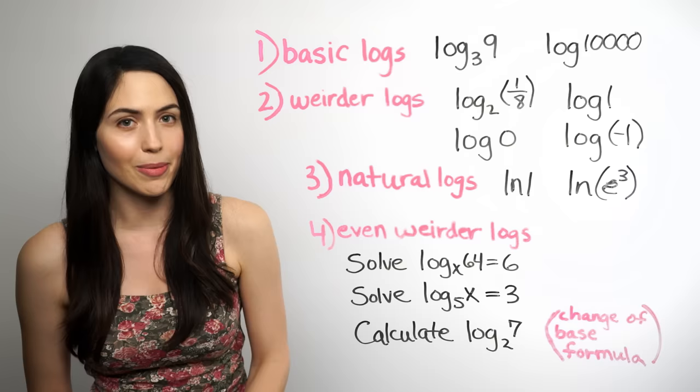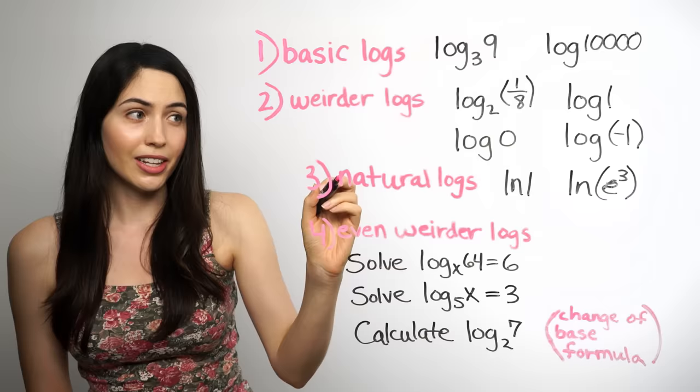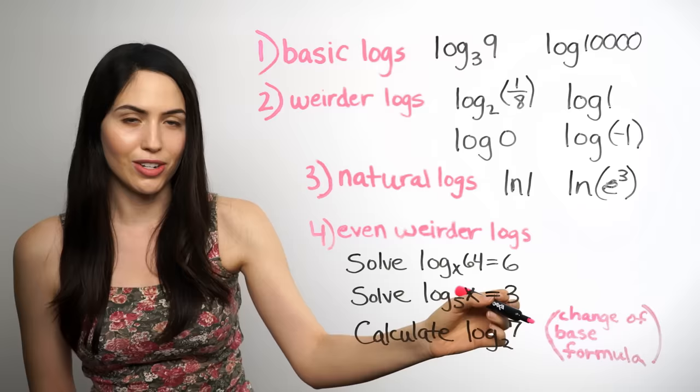I'm going to show you first the basic kind of logs, then I'll show you some weirder kinds if you have a log of a negative number, 0, 1, or a fraction. I remember hating the fraction kind. And then I'll show you natural logs, which are a special kind of log. And finally some even weirder logs — if you have an x in the log part of your expression, or if you have to use the change of base formula.